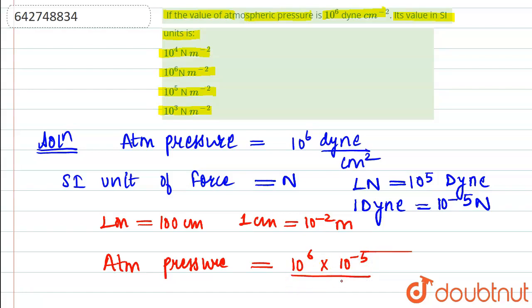In centimeter square, we write it as 10 to the power minus 2 square. That will be equal to 10 to the power minus 4.